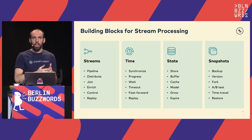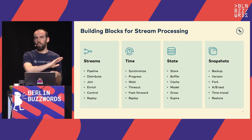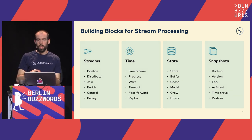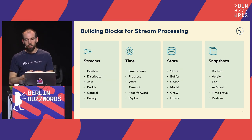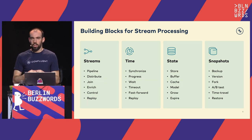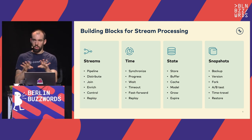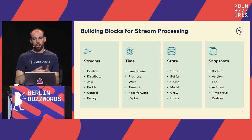Whenever State is involved, you need to snapshot the entire streaming topology. Flink has a concept called savepoints, which are easy backups that you can persist to cheap storage like S3. You can version these savepoints, fork your streaming application, try out business logic, and perform A/B testing. You can also time travel from these snapshots and restore your application from any point.